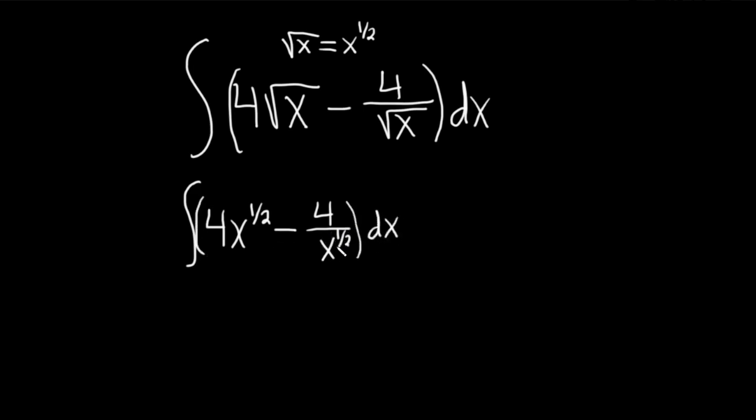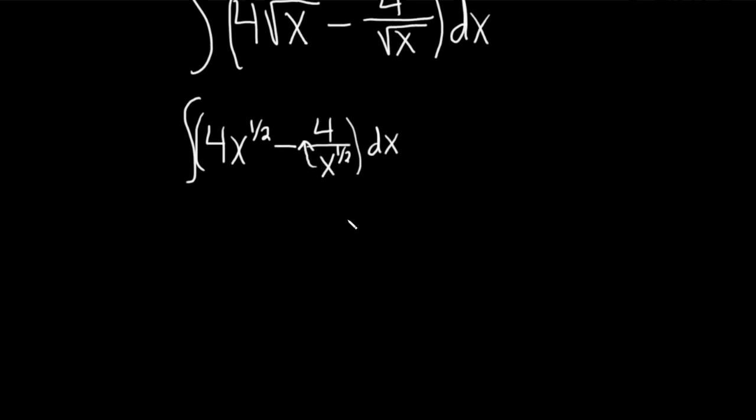Now we have x to a power down here. We really need it upstairs. So what we're going to do in the next step is take this x to the one-half and bring it up. When we do that the exponent will become negative. So this becomes the integral of four x to the one-half minus and then four x to the negative one-half. Then we have the parentheses and the dx.